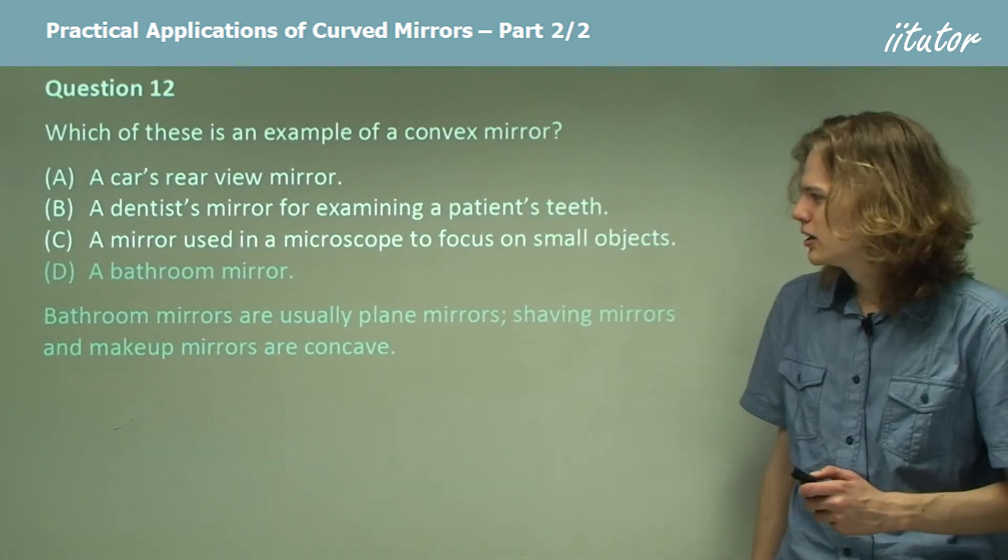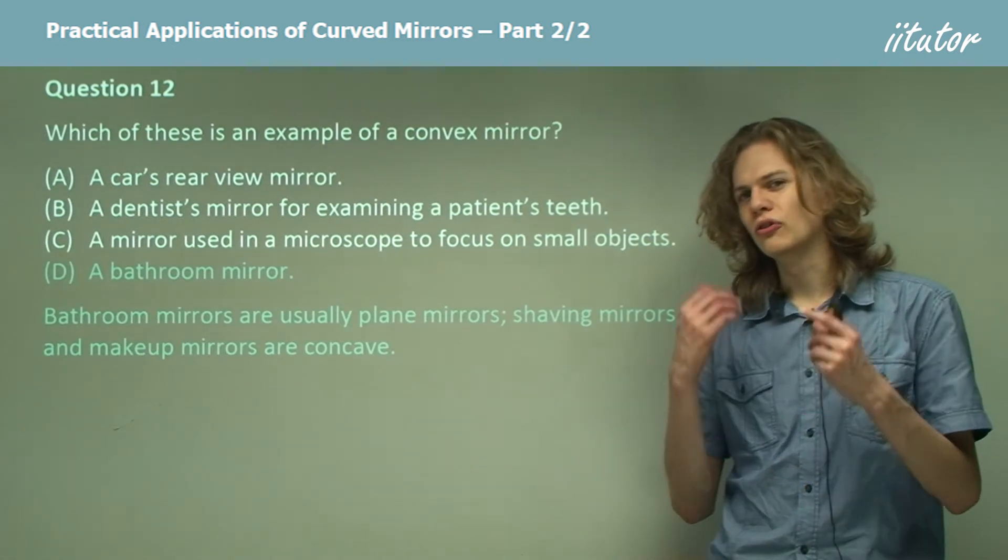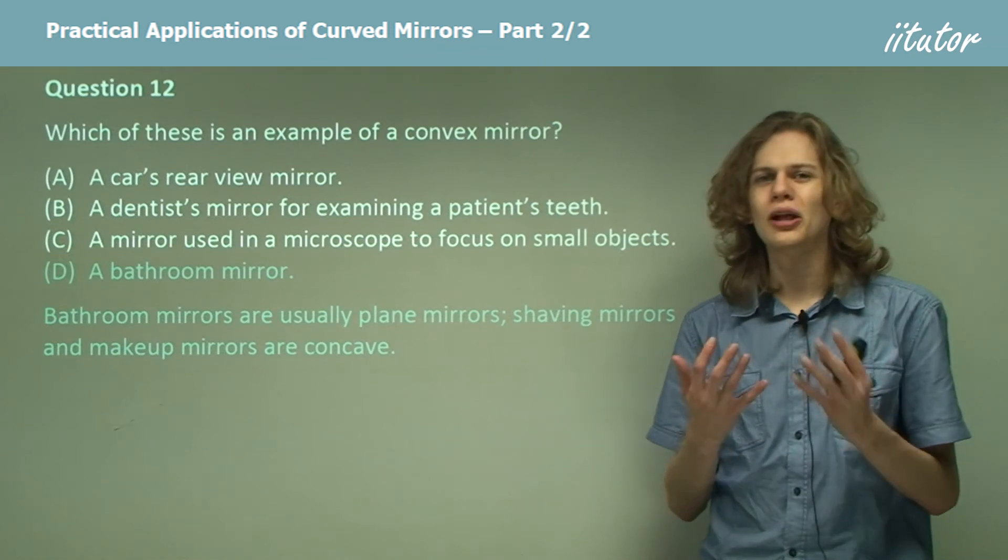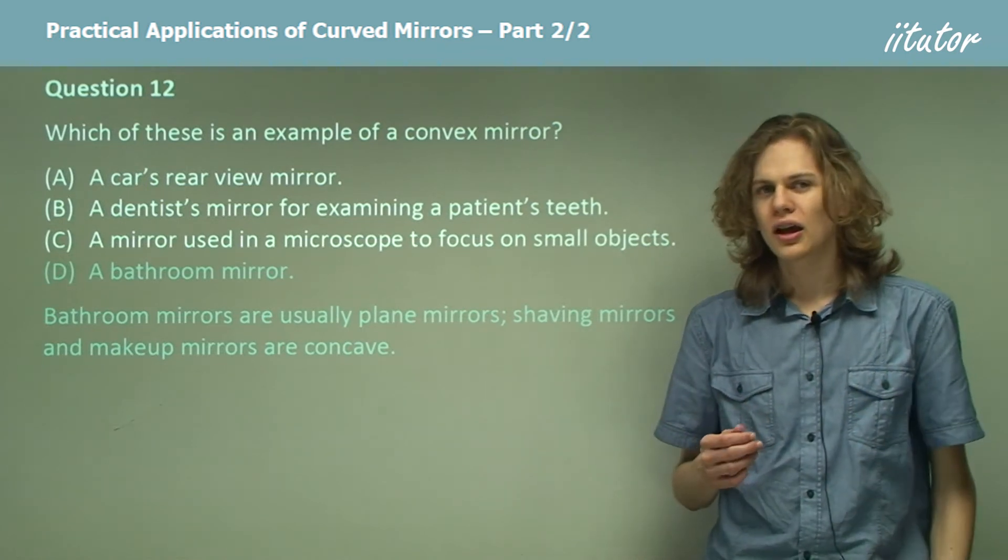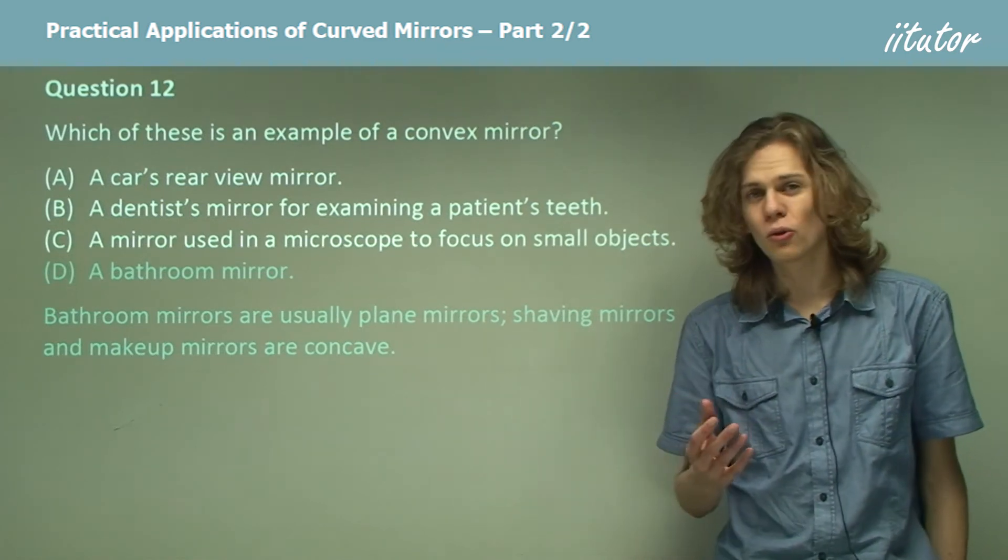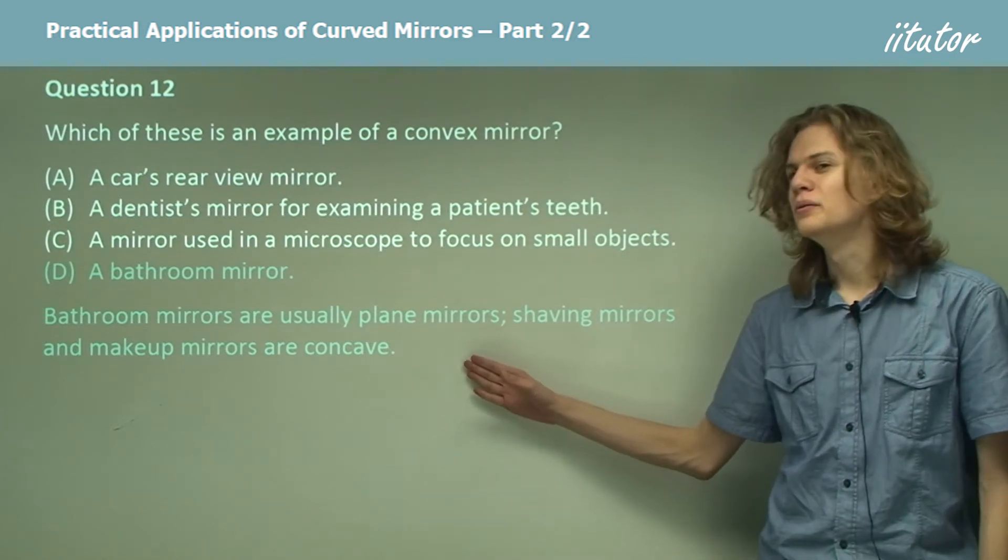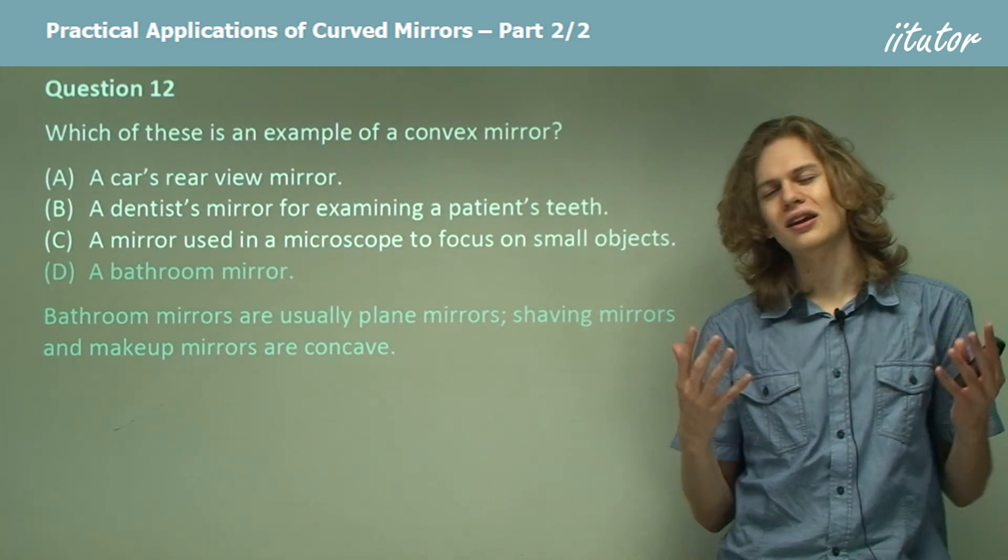A bathroom mirror. Well, I imagine that if you want to look at yourself in a bathroom mirror, you'd want an accurate reflection of what you look like. If you don't want the reflection to be distorted at all, that means that you need a plain mirror. A mirror that's completely flat and not curved.